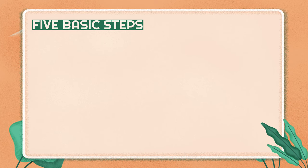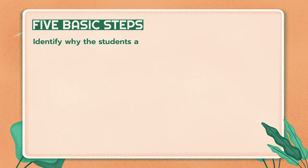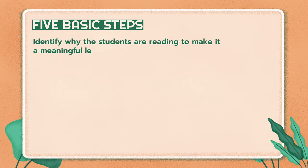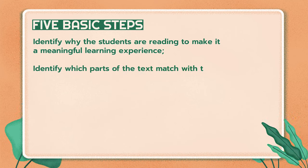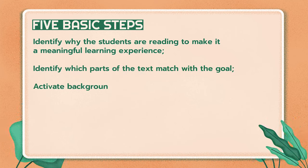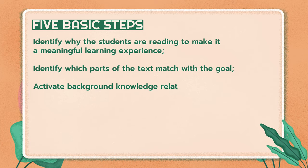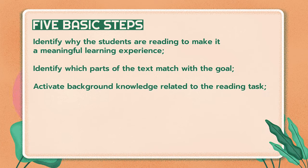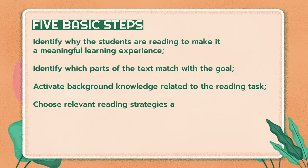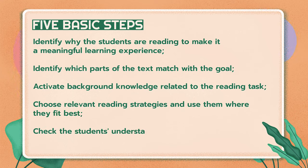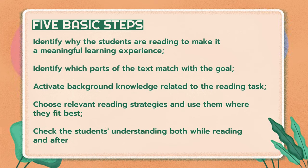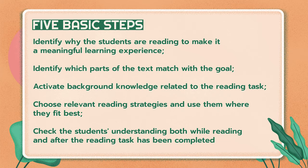When students are reading to learn, we want them to follow these five basic steps: identify why the students are reading to make it a meaningful learning experience; identify which parts of the text match with the goal; activate background knowledge related to the reading task; choose relevant reading strategies and use them where they fit best; and check the student's understanding both while reading and after the reading task has been completed.